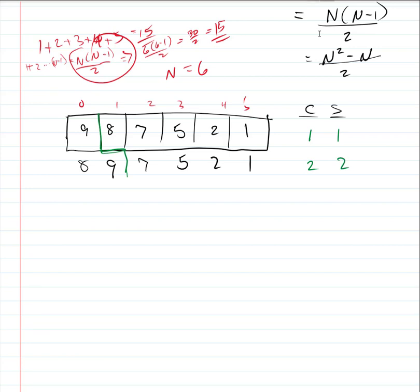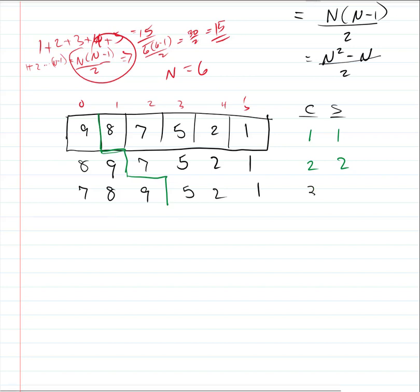With seven, we do two comparisons and two swaps to end up with seven, eight, nine in the sorted portion, leaving five, two, one unsorted. Now we take five: comparison against nine, swap; comparison against eight, swap; comparison against seven, swap — for every comparison there's a swap, so three comparisons and three swaps. Our five ends up placed at the beginning: five, seven, eight, nine.